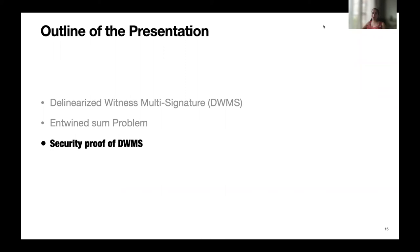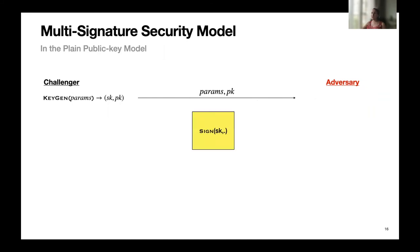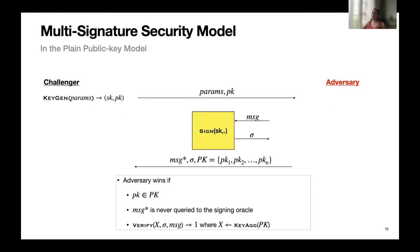Now I will briefly explain how we show the security of DWMS. First I need to explain our security model. We consider the security of our multi-signature scheme in the plain public key model, very similar to the existential unforgeability game. The challenger generates the secret and public key, then sends the parameters and public key to the adversary. The adversary has access to a signing oracle — it sends a message and receives a signature, as many times as it wishes. In the end, it outputs a forgery. We say the adversary wins if the set of public keys includes the honest party's key PK, the message has never been queried to the signing oracle, and the verification of the forgery succeeds.